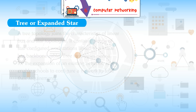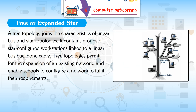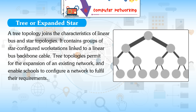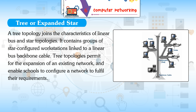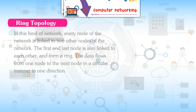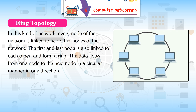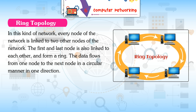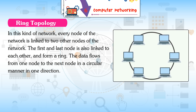Tree (or expanded Star) topology joins the characteristics of linear bus and star topologies. It contains groups of star-configured workstations linked to a linear bus backbone cable. Tree topologies permit expansion of an existing network and enable schools to configure a network to fulfill their requirements. Ring topology: every node is linked to two other nodes, with the first and last node also linked to each other, forming a ring. Data flows from one node to the next in a circular manner in one direction.